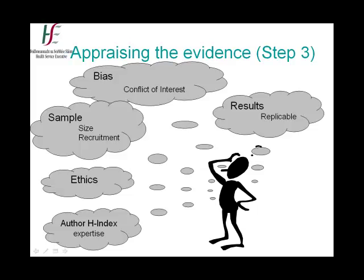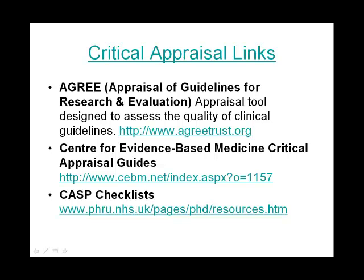Having completed the first two steps of conducting a literature review — asking a focused question and locating the evidence — the third step is appraising the evidence. There are many points to consider when appraising resources, such as bias, quality of material, peer review, expertise of the author, design methods, etc. Further information can be found via some of the sources noted on this slide.